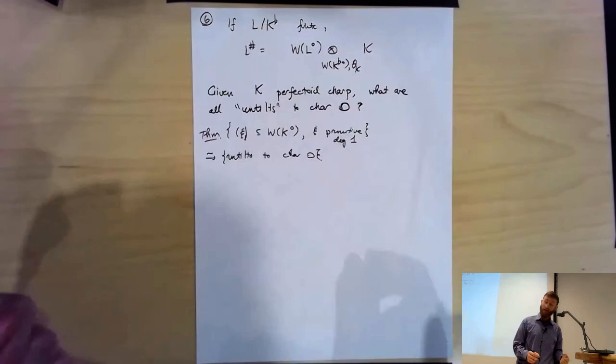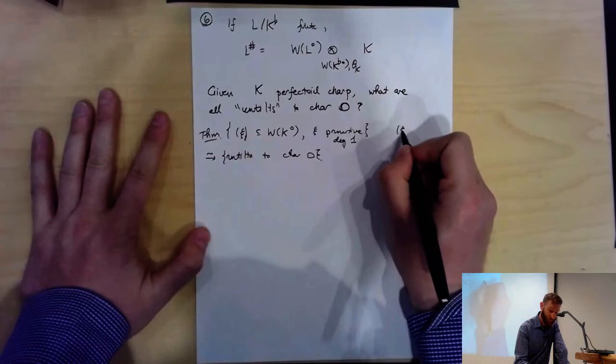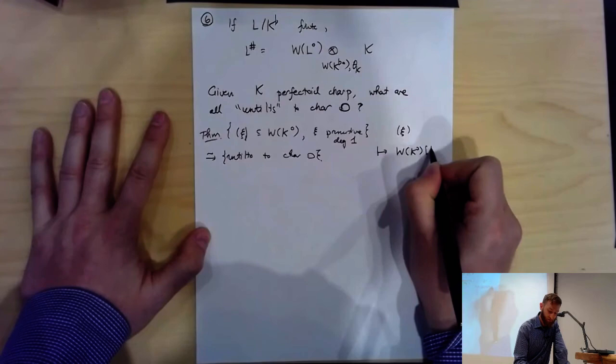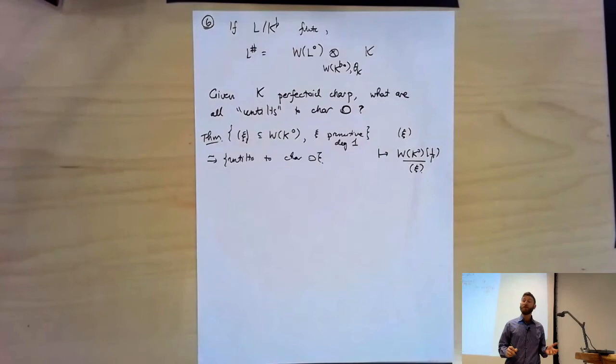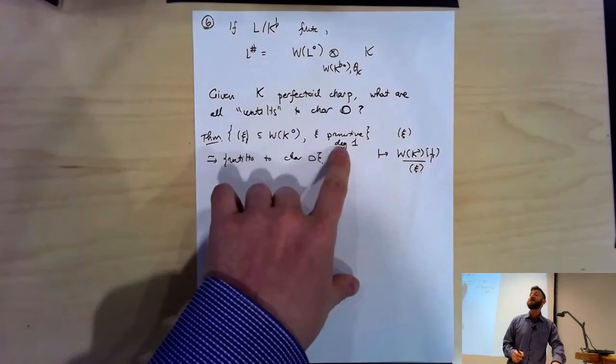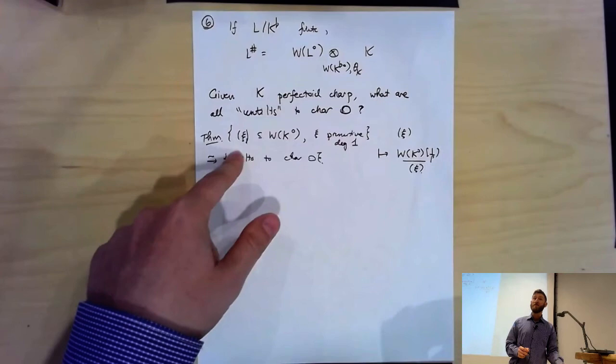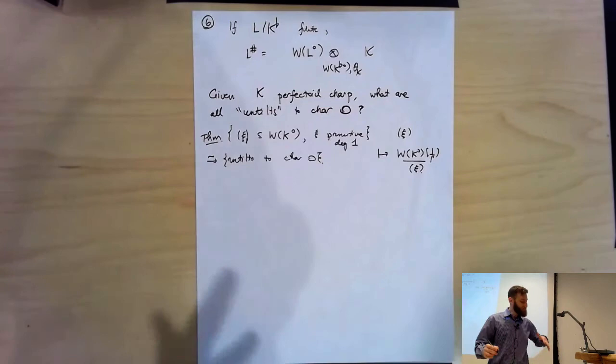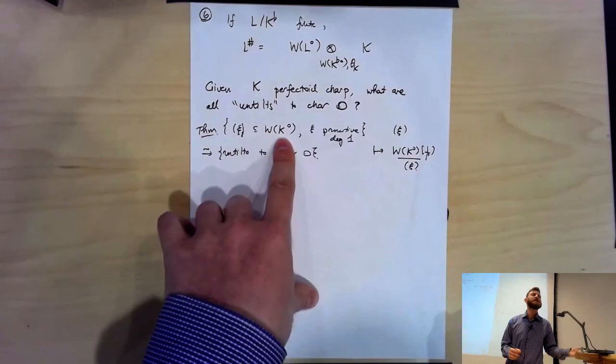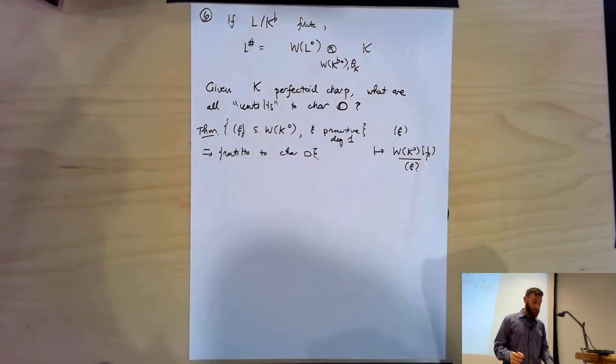The map sends such an ideal to W(K-circ) modulo that element — that's a perfectoid field of characteristic zero whose tilt is K. But this is slightly opaque: it's hard to decide whether two primitive-degree-one elements generate the same ideal. Conceptually, we'd much rather have a geometric object whose points classify the untilts — a moduli space. So I'm going to push along in this direction by suggesting a very alternate strategy.